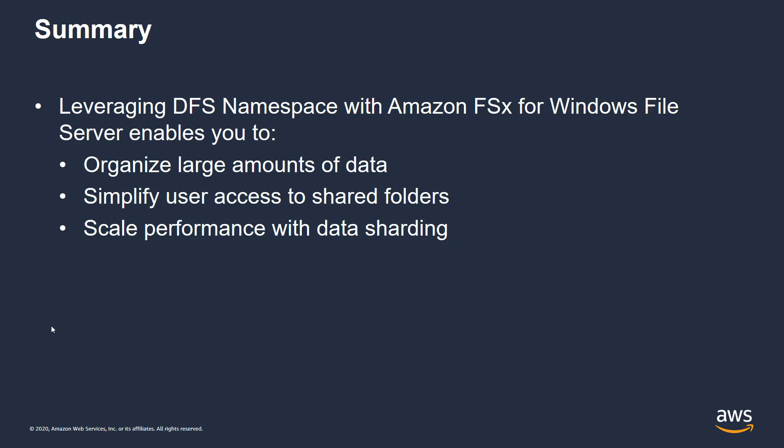In addition, we demonstrated how you can scale performance with data sharding. For home folders, by partitioning based on users' first names — A to F hosted on one file system, G to M on another, N to Z on a third — each file system can have up to two gigabytes per second of throughput. Therefore, you can scale the performance of your system as high as needed just by sharding the data across different file systems.